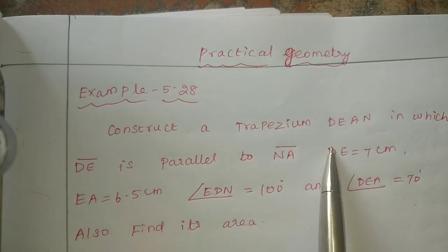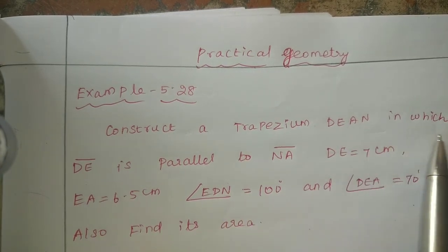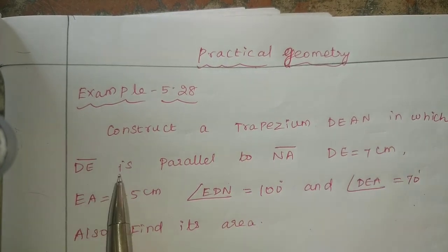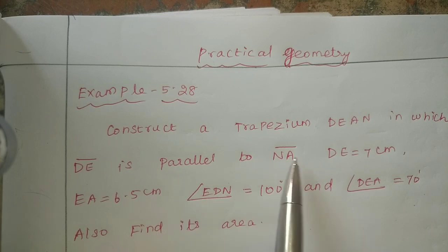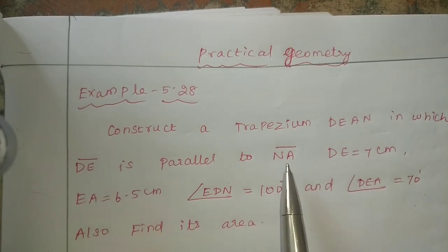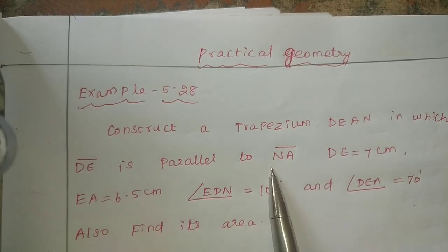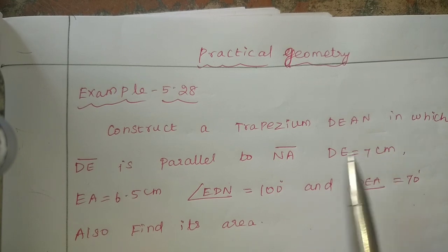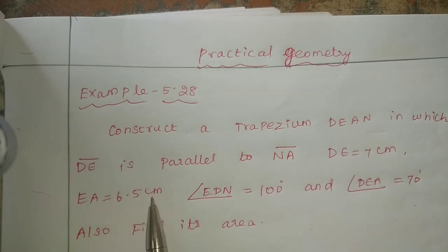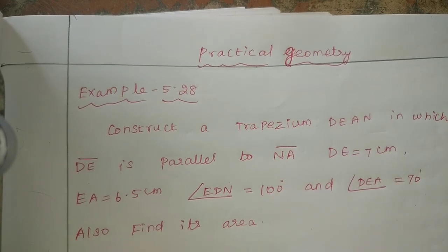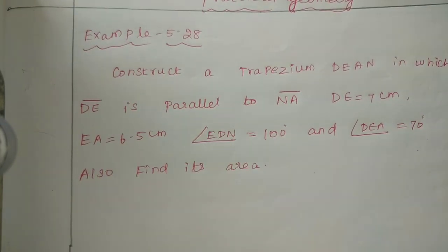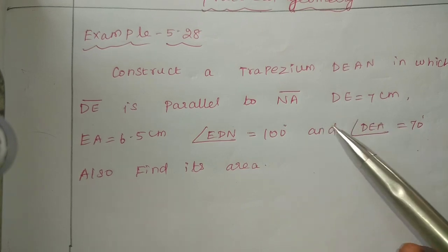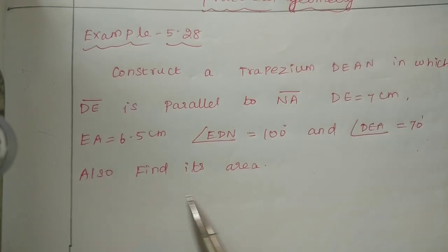Construct the trapezium DEAN, in which DE is parallel to NA. DE equals 7cm, EA equals 6.5cm, angle DEA plus angle DAN equals 70°. Also find the area.